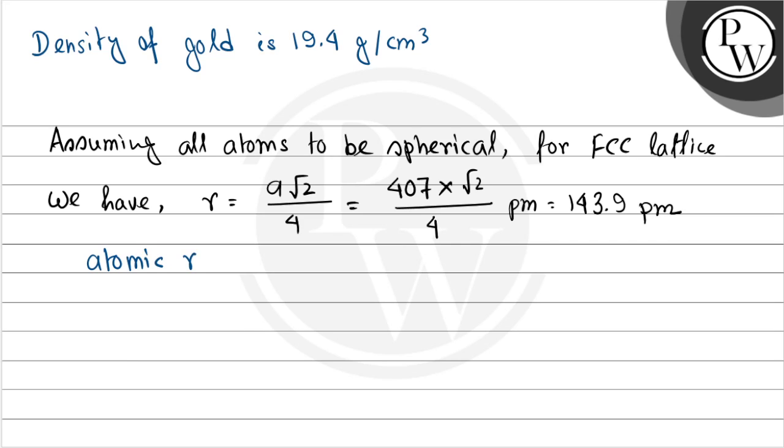So your final answer for the second part is: atomic radius equals 143.9 picometer. And this will be your final answer. I hope you understood well. Best of luck, thank you.